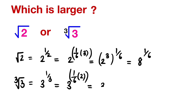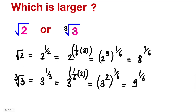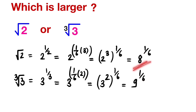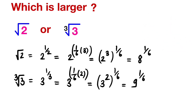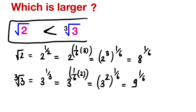This becomes 3 squared raised to 1 by 6, which equals 9 raised to 1 by 6. Now we have managed to get these powers the same — both are 1 by 6. So we just compare the bases: the base is 8 here and 9 there. Clearly 8 is less than 9, so 8 raised to 1 by 6 is less than 9 raised to 1 by 6. Therefore, square root 2 is less than cube root 3.